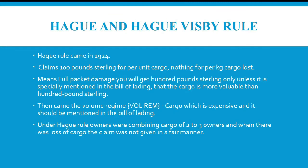The Hague Rule came in 1924. It claims £100 sterling per unit of cargo, and nothing per kg for cargo lost. This means for a full packet damaged, you will get £100 sterling only, unless it is specially mentioned in the bill of lading that the cargo is more valuable than £100 sterling. Cargo which is expensive should be mentioned in the bill of lading. Under the Hague Rule, owners were combining cargo of two to three owners, and when there was a loss of cargo, the claim was not given in a fair manner.